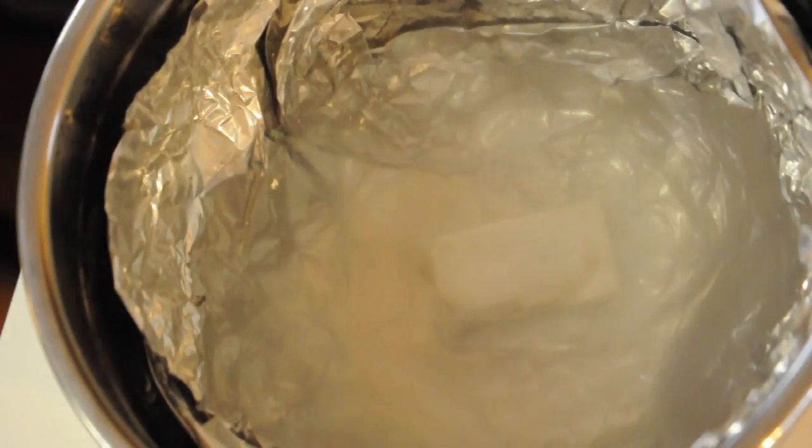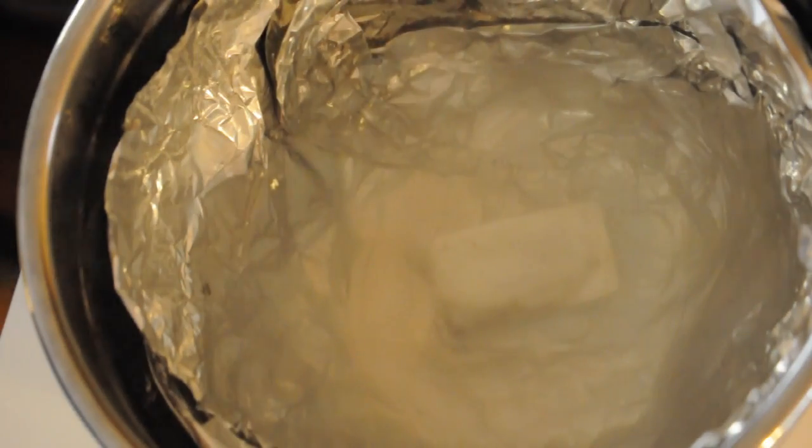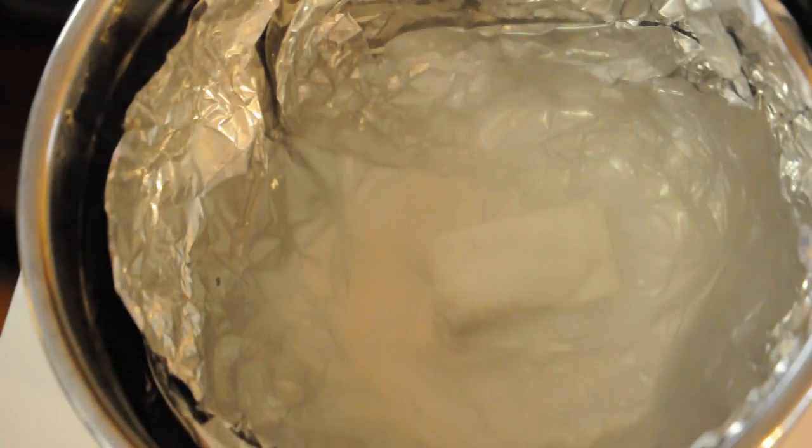Now if your silver is tarnished really bad like this one is on the bottom here, then you may have to do the treatment several times. I'm going to go ahead and put the pot boiling again with some water.